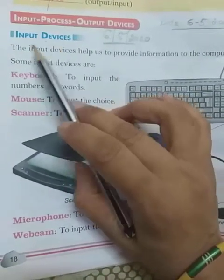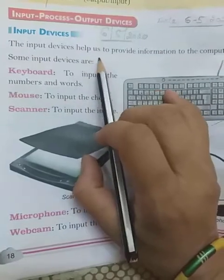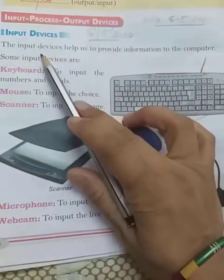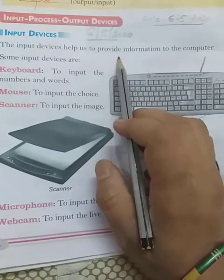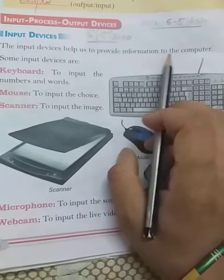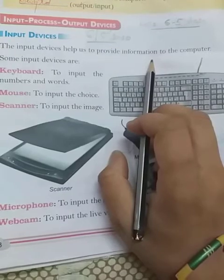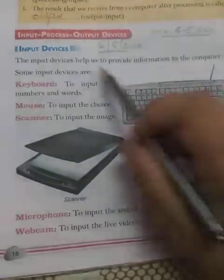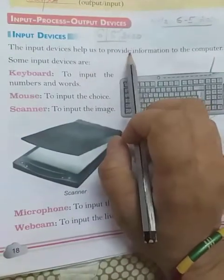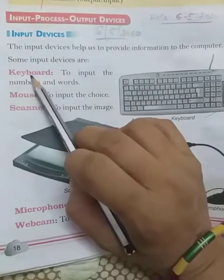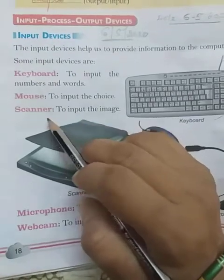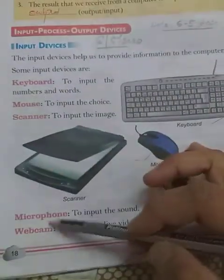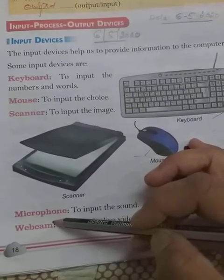First, input devices. The input device helps us to provide information to the computer. Some input devices are: keyboard, mouse, scanner, microphone, and webcam. These five devices help to give information to the computer.